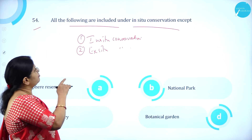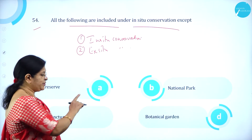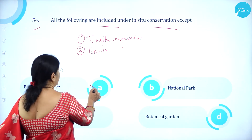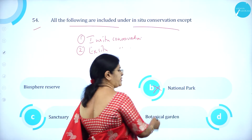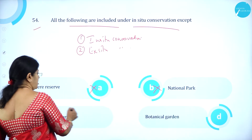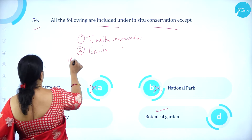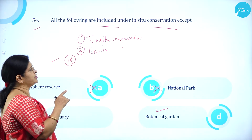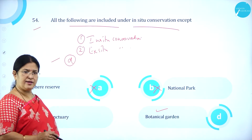So all the following are included under in-situ conservation except botanical garden. Option A, biosphere reserve — wrong (it is in-situ). Option B, national park — wrong. Option C, sanctuary — wrong. Option D, botanical garden — correct (it is ex-situ). So option D is correct.